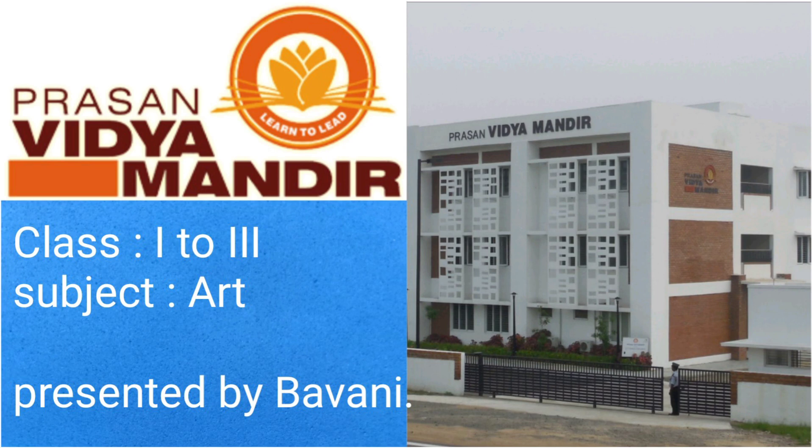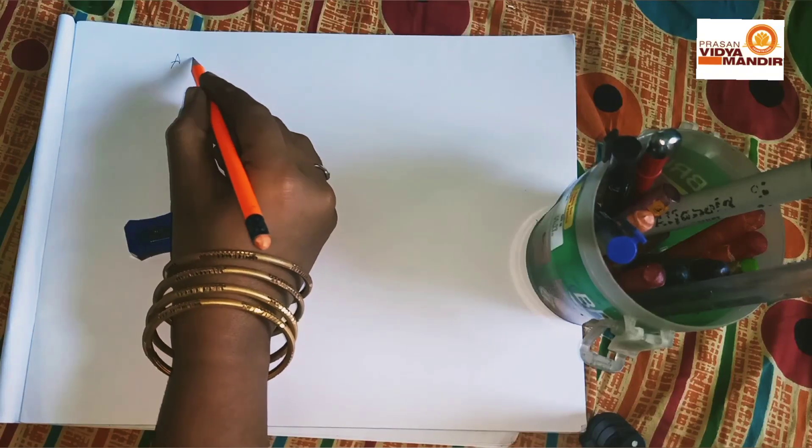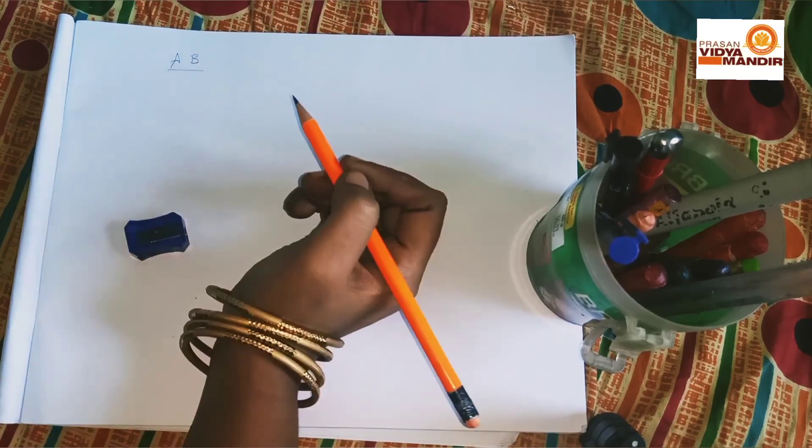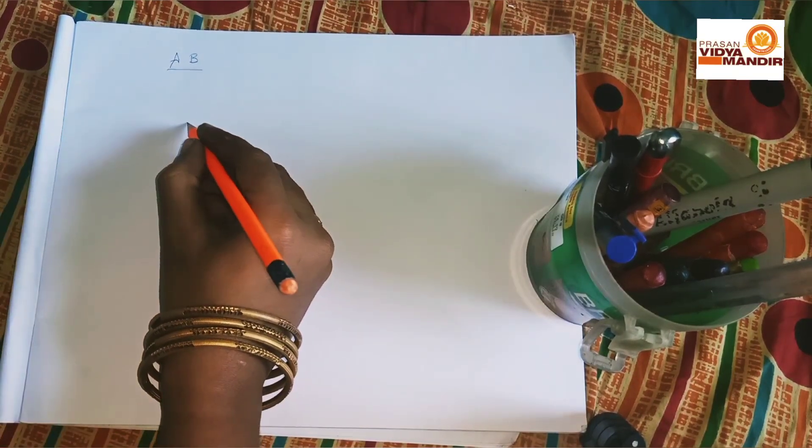Namaste dear children, this is Vavani from Prasamitya Mandir. In this section we are going to see easy method of drawing using alphabets. First we try with A and B letter.